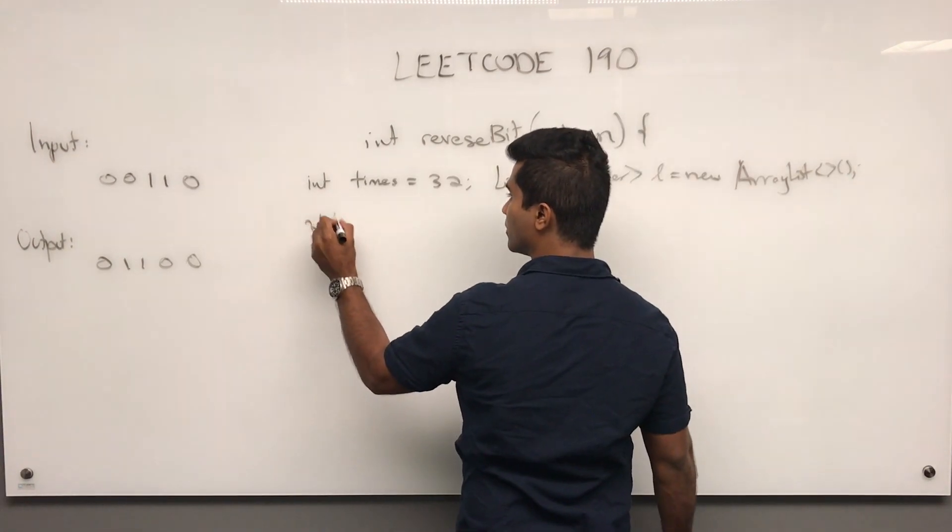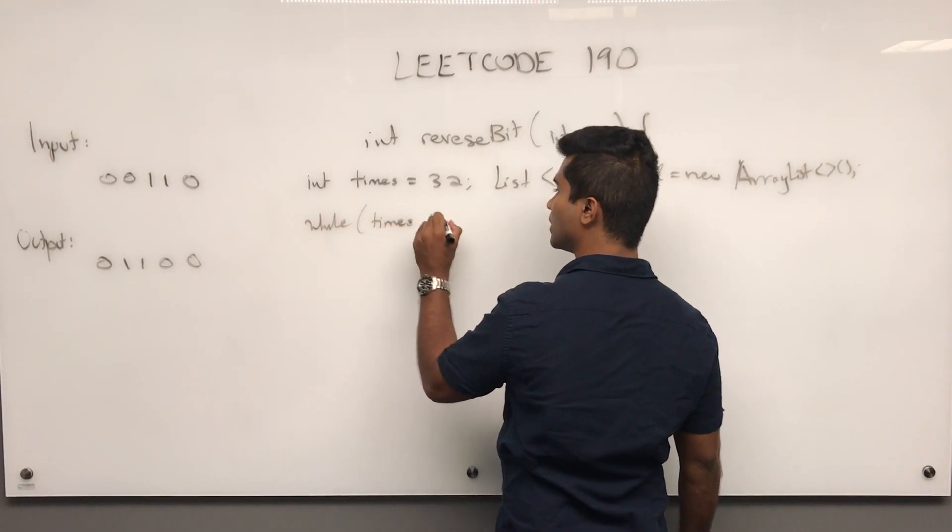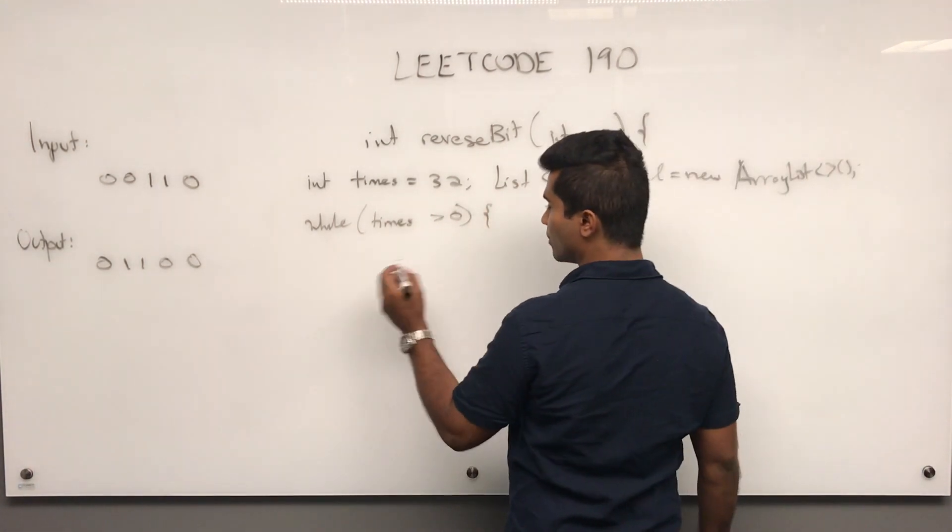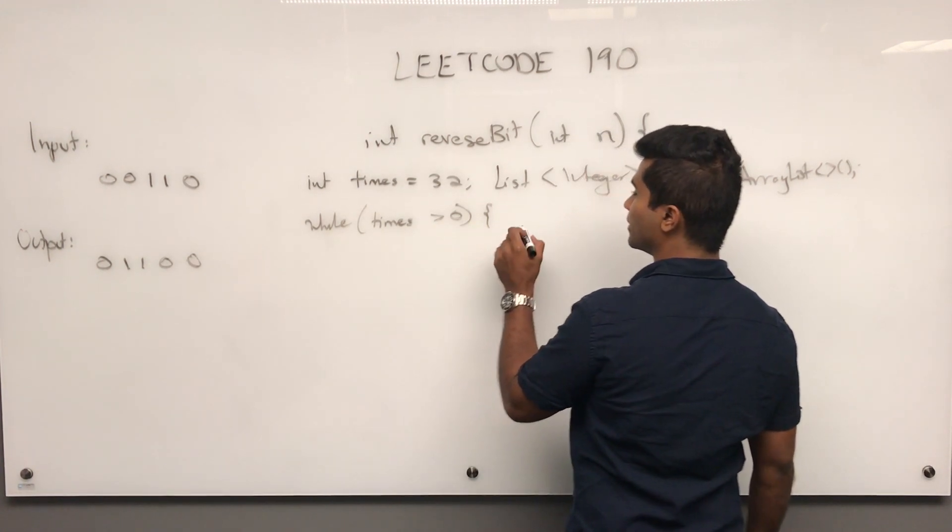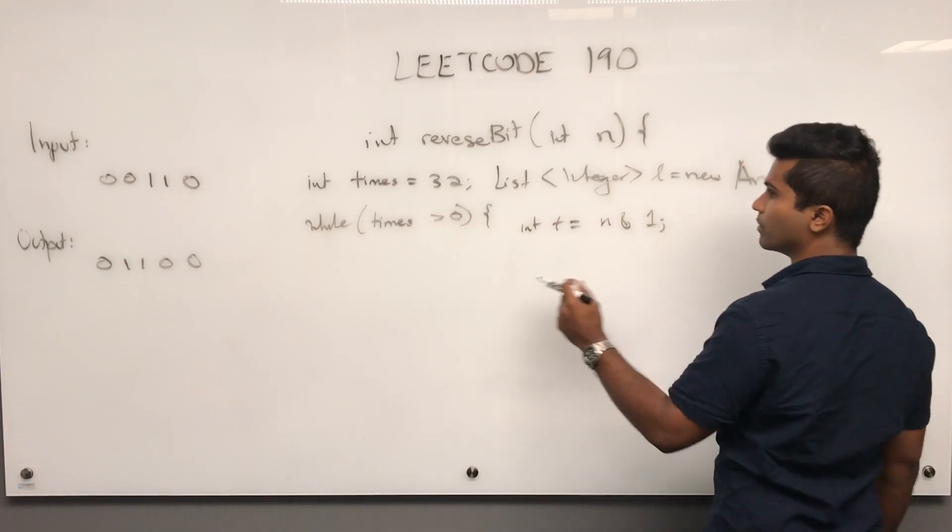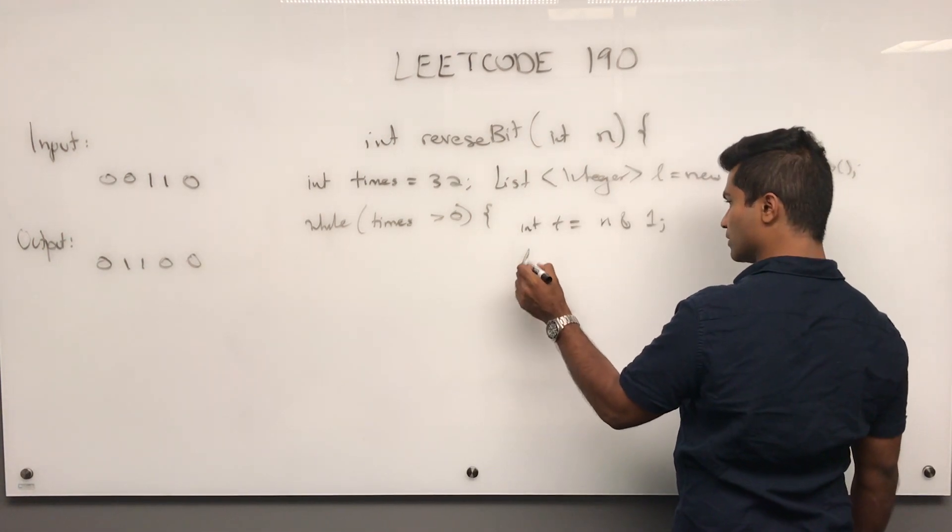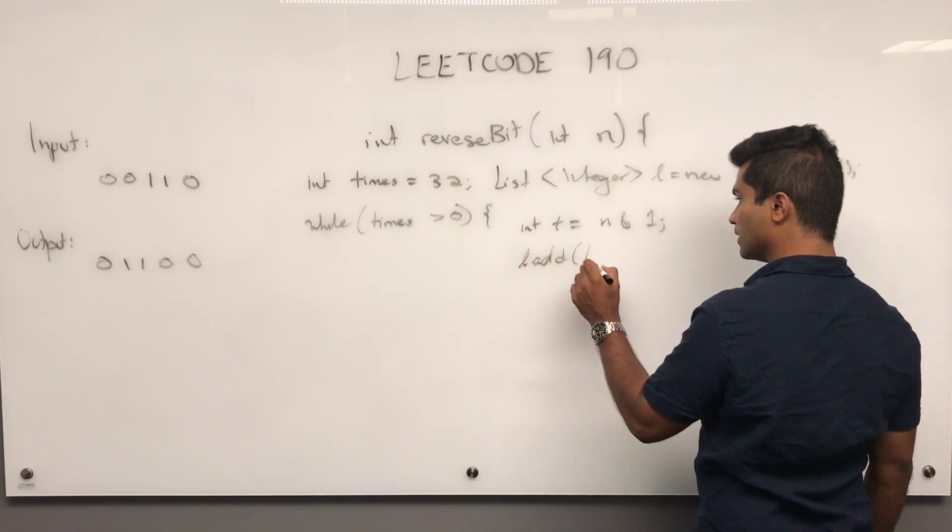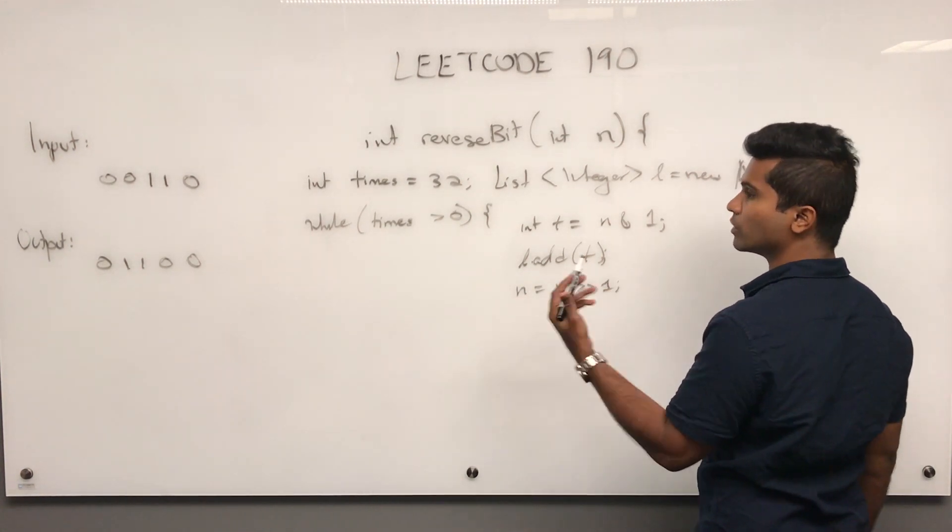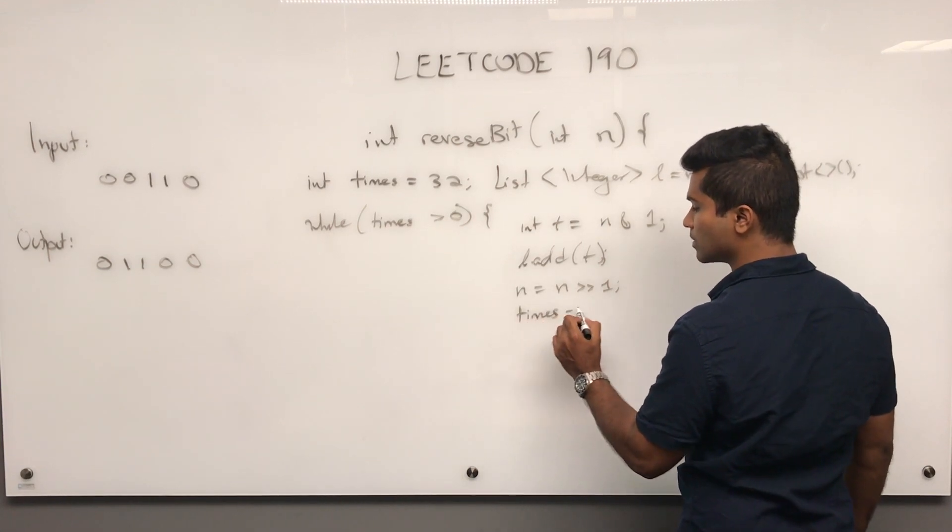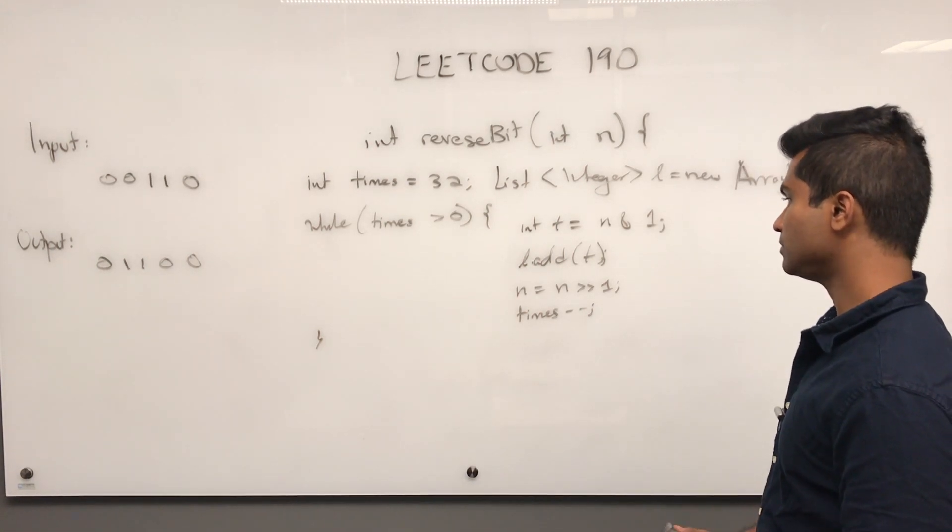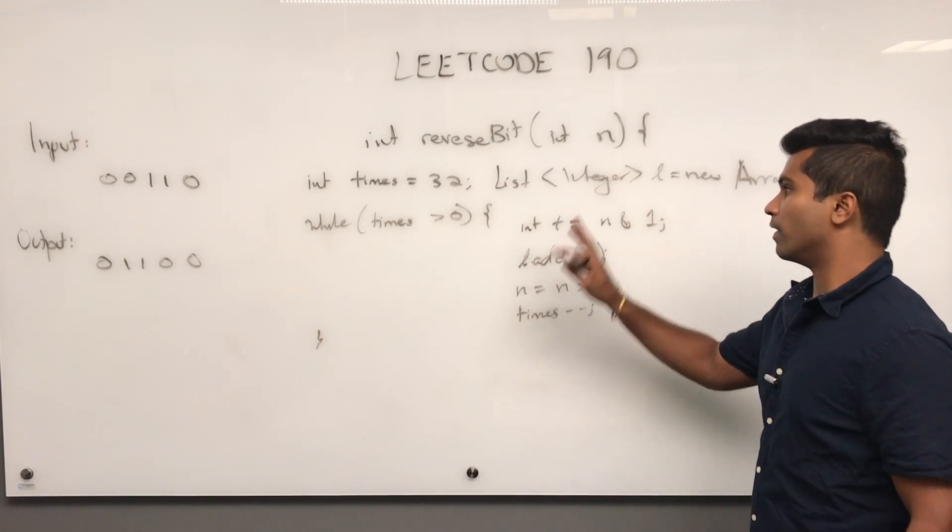While we still have time and need to collect more bits, first get a temporary variable. t equals n AND 1, which gets the rightmost bit. Add t to the list, then shift n over one time since we're done retrieving. Decrement times by one, because we only need to do this 32 times.